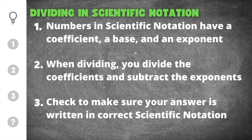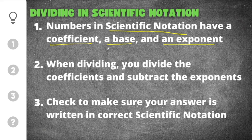We have three important things to remember when dividing in scientific notation. The first is that all numbers in scientific notation have a coefficient, a base, and an exponent. For example, 2000 in scientific notation is 2 times 10 to the third power. The coefficient is 2, the base is 10, and the exponent is 3. All numbers in scientific notation will have these three things.